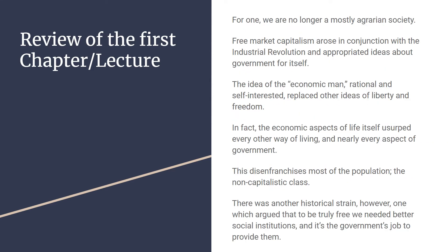Dewey tells us in Chapter 1 we're not really an agrarian society any longer. We don't have these one-to-one creations and transactions. We are an industrial society, a technological scientific society. And now, 105 years later, we are an information society, a service society. Dewey tells us free market capitalism rose up in power in conjunction with the industrial revolution, and the free market economists appropriated ideas from classical liberalism for itself.